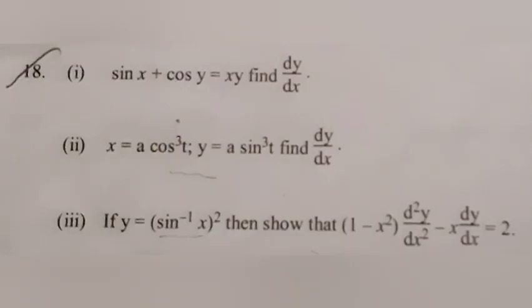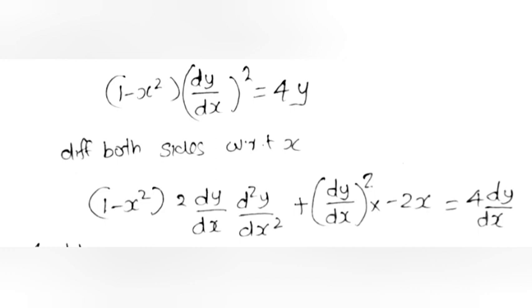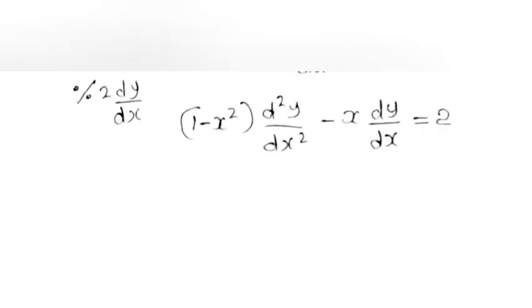Part 3. If y = (sin⁻¹x)², show that (1 − x²) d²y/dx² − x dy/dx = 2. Given y = (sin⁻¹x)², dy/dx = 2sin⁻¹x · 1/√(1−x²). So √(1−x²) · dy/dx = 2sin⁻¹x. Squaring: (1−x²)(dy/dx)² = 4y. Differentiating both sides: (1−x²)·2(dy/dx)(d²y/dx²) + (dy/dx)²·(−2x) = 4dy/dx. Dividing by 2dy/dx: (1−x²) d²y/dx² − x dy/dx = 2.